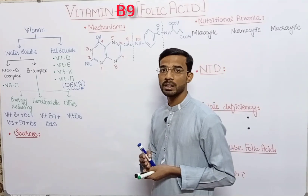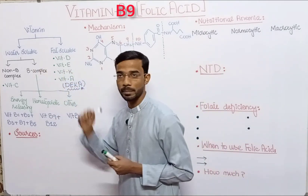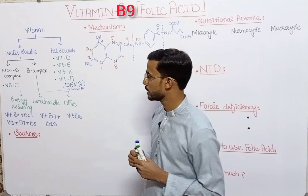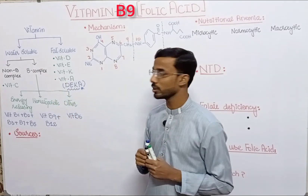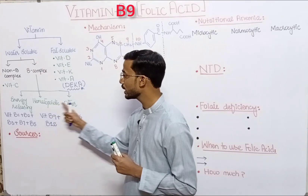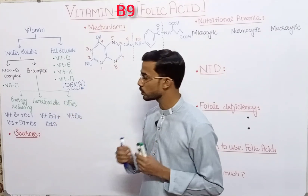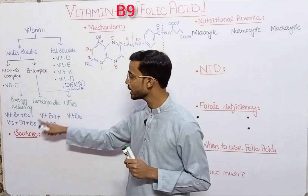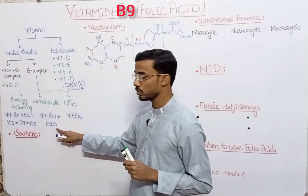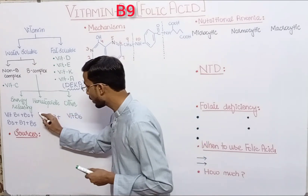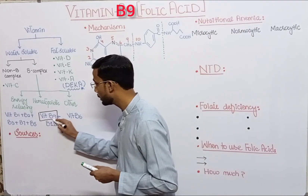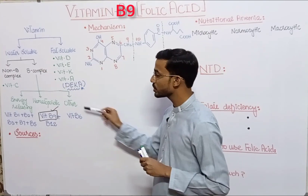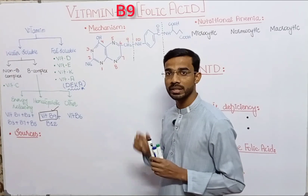Next we divide the water soluble vitamins into two groups: B complex and non-B complex. Non-B complex vitamins include vitamin C, which is also called ascorbic acid. B complex is further divided into three categories: energy releasing, hematopoietic, and others. Energy releasing vitamins include vitamin B1, B2, B3, B7, and B5. Hematopoietic vitamins are vitamin B9 and B12. Our main focus in this lecture is on vitamin B9, which is B complex and hematopoietic in nature. The other category includes vitamin B6, which we will discuss later.